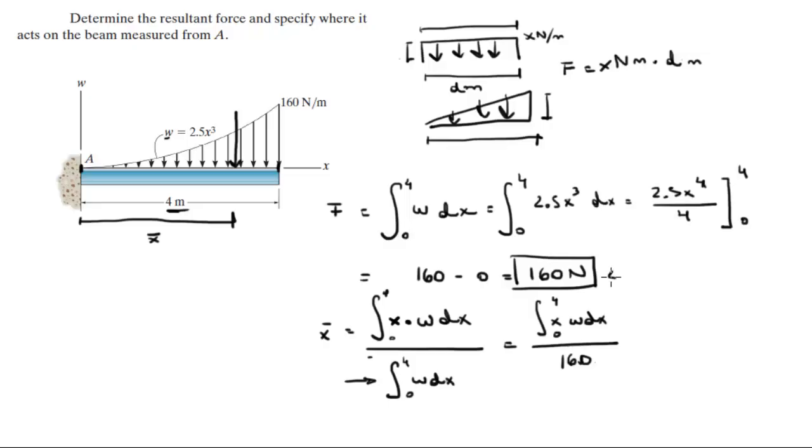Now x times w, which is 2.5x³, is equal to 2.5x to the 4. So the integral from 0 to 4 of - all I did is multiply the x times w over 160. So this integral comes out to be 2.5x to the 5 over 5 over 160.